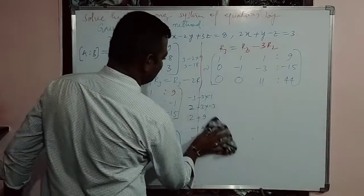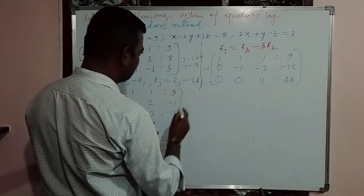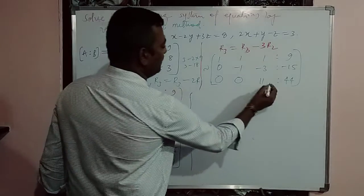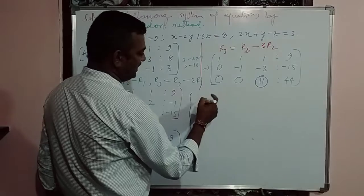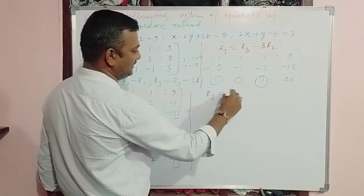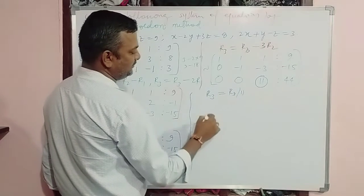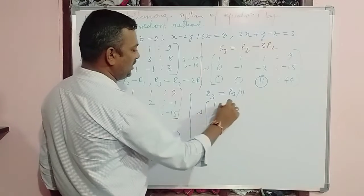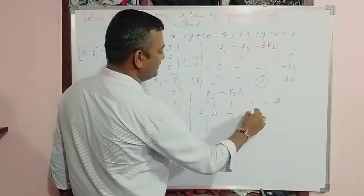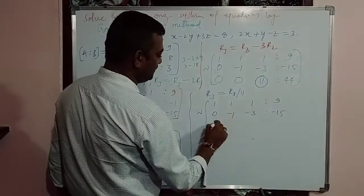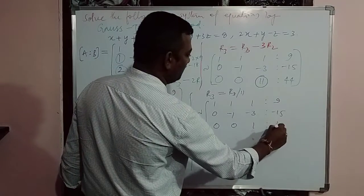Now I am going to make this element 1 by dividing R3 by 11. After dividing, the matrix becomes: Row 1: 1, 1, 1 | 9; Row 2: 0, -1, -3 | -15; Row 3: 0, 0, 1 | 4. So 44 divided by 11 becomes 4.